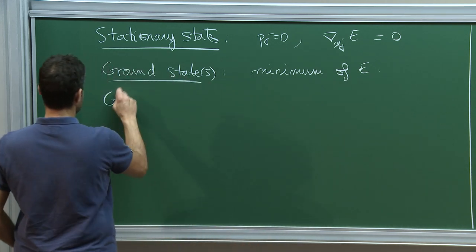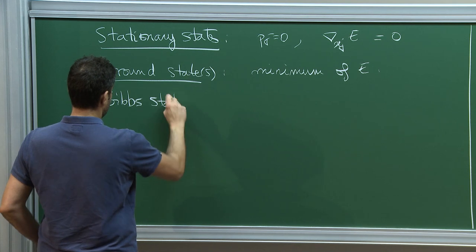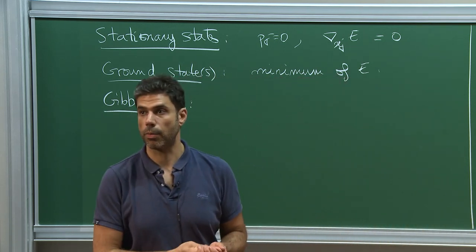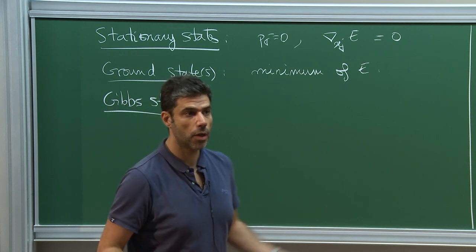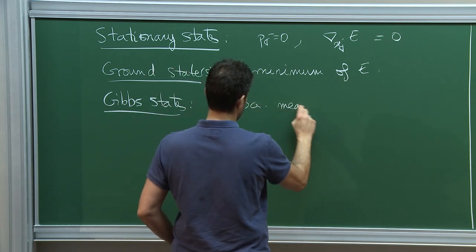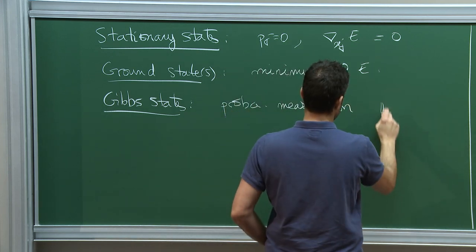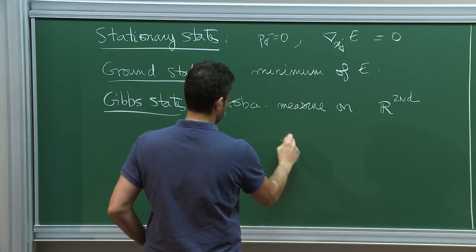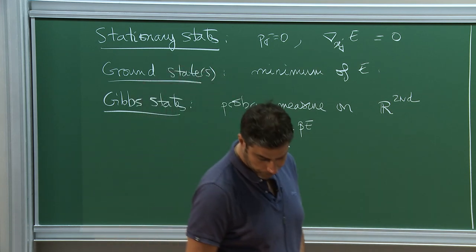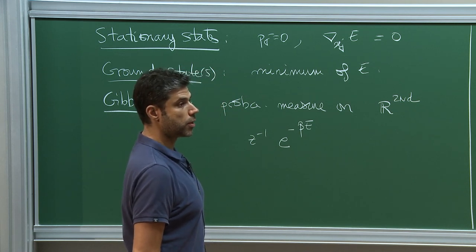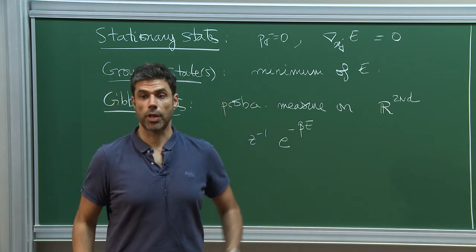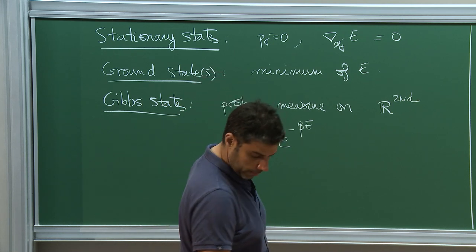Then there are Gibbs states, which are a little more complicated because they are probabilistic. You don't specify exactly where the particles are and what their velocities are, but just give a probability for these. It's a probability measure on the phase space of the form e^{-βE} with a normalization factor Z in front. You need assumptions to make sure you can integrate over the whole space and get a probability measure.